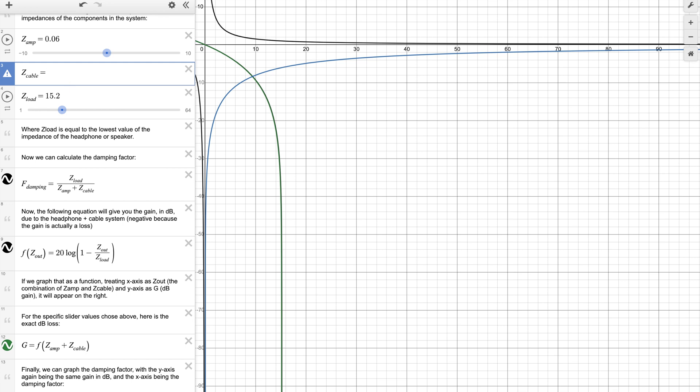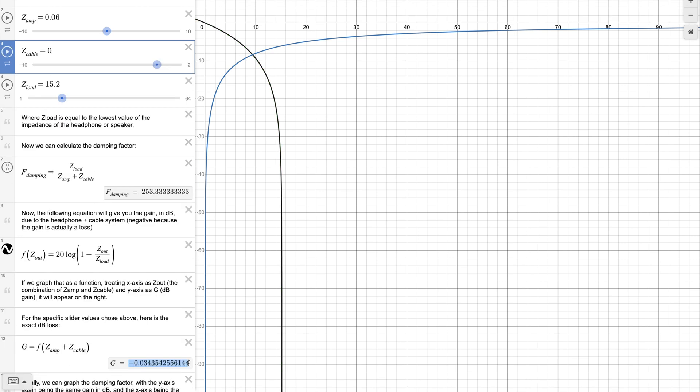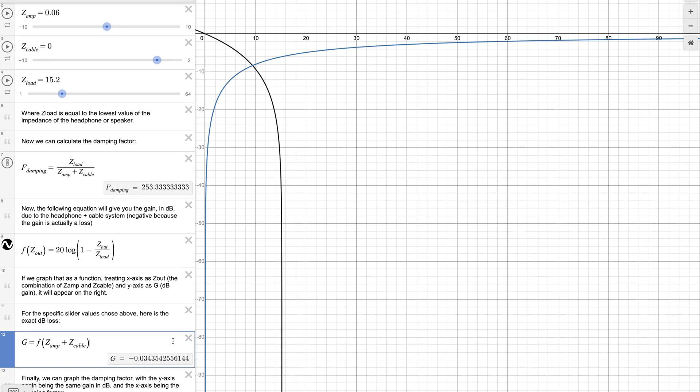Before we determine the effect of the Linem cable, let us see what happens if we use a theoretically zero resistance cable. The SPL drop of the amplifier itself due to its own output impedance is about 0.03 dB. If we simply subtract this number from our formula, we can calculate the SPL drop from the cable itself.